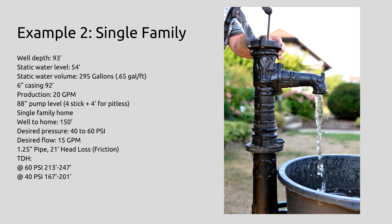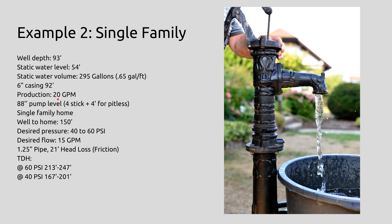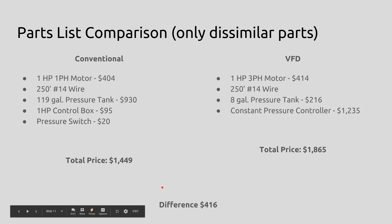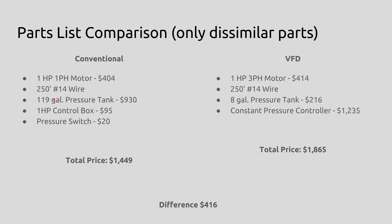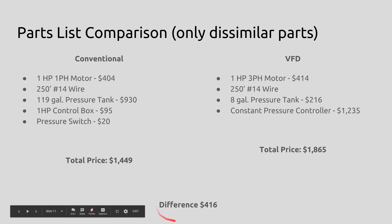Example two: well depth 93 feet — a pretty shallow one, because I felt it was going to be a much closer comparison. We've got a really shallow well at 93 feet with a static water level of 54 feet. Distance to home is 150 feet. We want 15 gallons per minute, and the well produces 20 gallons per minute, so we're definitely not at risk of exceeding that. With the dissimilar part comparison — the motor, and the wire is actually the same size on this one so I didn't put a number next to it. We've got a 119 gallon pressure tank versus an eight gallon. That's a big cost difference, as is the one horsepower control box versus the one horsepower constant pressure control box. Total price on the conventional: $1,449. Total price on the VFD: $1,865. The difference is in favor of the conventional system on this one.